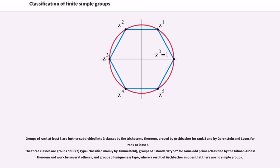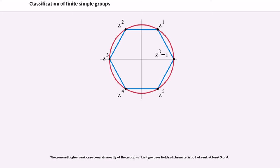Groups of rank at least three are further subdivided into three classes by the trichotomy theorem, proved by Aschbacher for rank three and by Gorenstein and Lyons for rank at least four. The three classes are: groups of GF(2) type, classified mainly by Timmesfeld; groups of standard type for some odd prime, classified by the Gilman-Griess theorem and work by several others; and groups of uniqueness type, where a result of Aschbacher implies that there are no simple groups. The general higher rank case consists mostly of the groups of Lie type over fields of characteristic two of rank at least three or four.